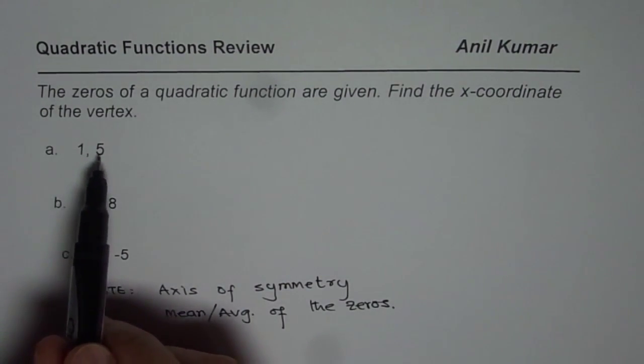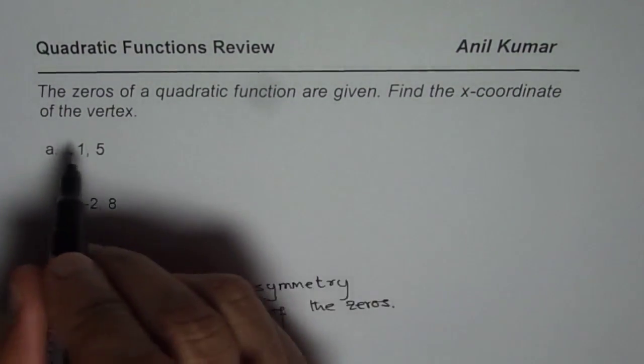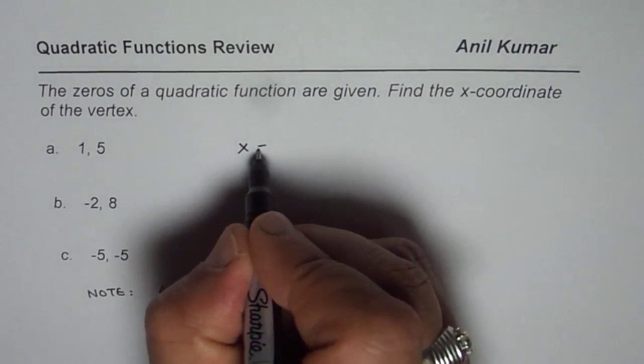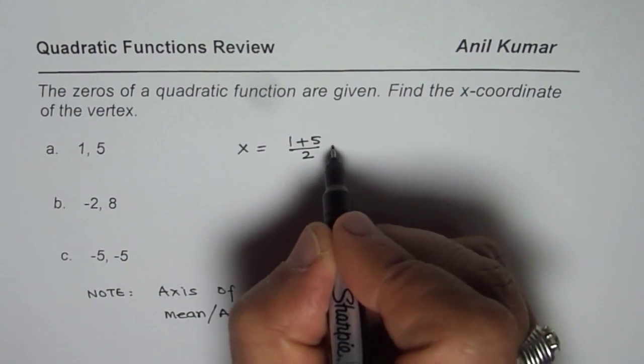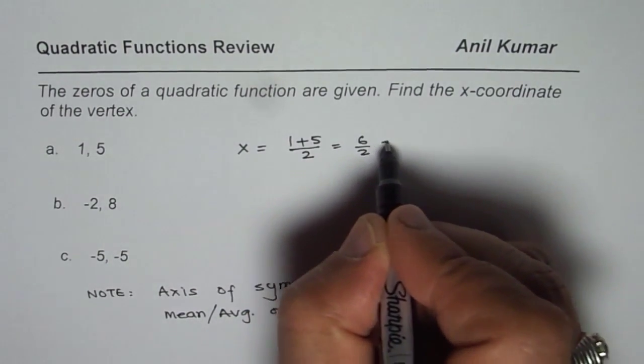So we have the zeros at 1 and 5, therefore the x-coordinate of the vertex should be at x equals 1 plus 5 divided by 2, and that is 6 divided by 2 equals 3.